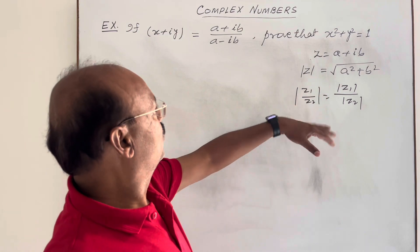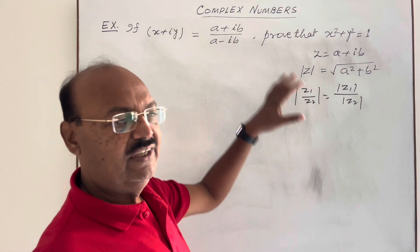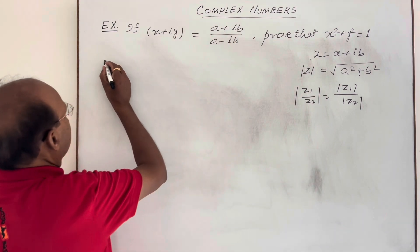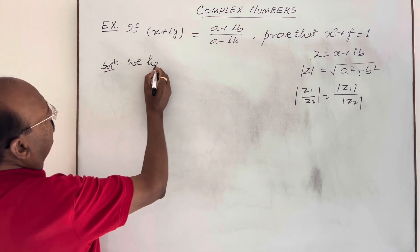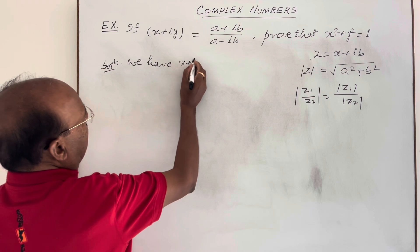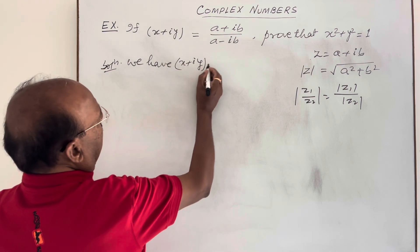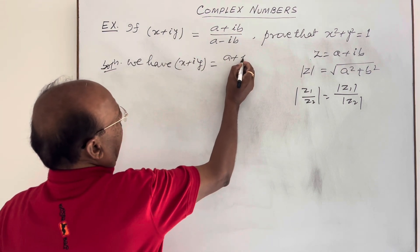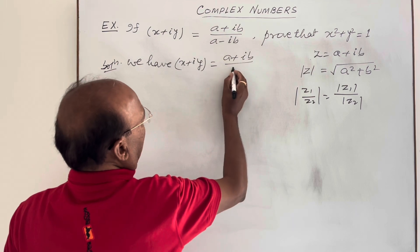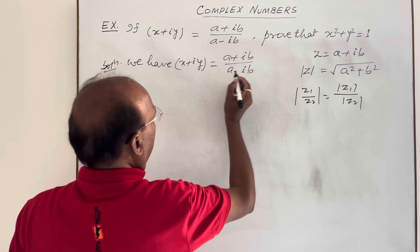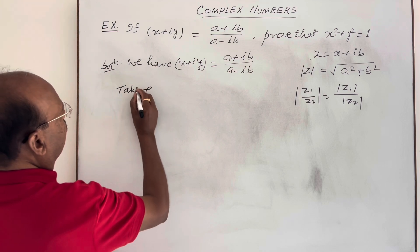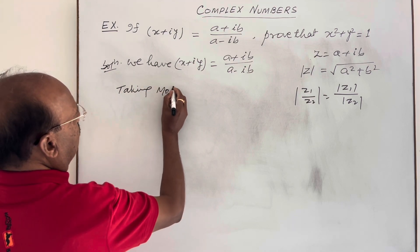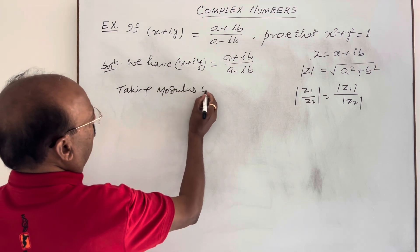So by using these two properties we can solve this question very easily. Let us see the solution. Here we have given x plus iy is equal to a plus ib upon a minus ib. Now taking modulus both sides,